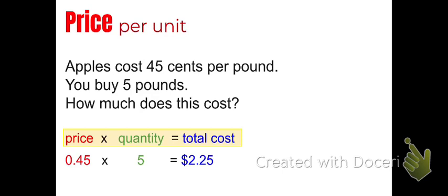So for example, if apples cost 45 cents, remember that's $0.45. If it's $0.45 per pound and you buy 5 pounds, in order to find out how much this costs, you just take the price, $0.45, and multiply it by the quantity.